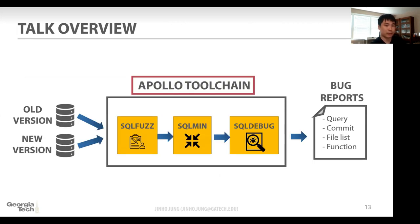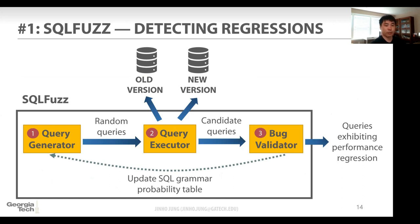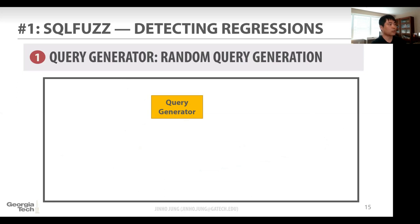The first component is SQL Fuzzer, which tries to detect performance regressions. This diagram shows two database connections — one to the old version and the other to the new version. In our evaluation with Postgres, we used four different connections because Postgres supports four different versions at the same time. First, the query generator creates random queries based on the SQL grammar probability table. Then executors run the query, measure the time, and compare. If the differences are larger than the threshold value, we label the query as a candidate. Finally, we validate the query to remove any false positive cases.